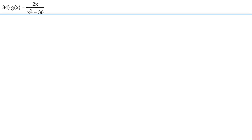For number 34, we're going to be finding the domain of the function. So here we have g of x is equal to 2x over x squared minus 36.